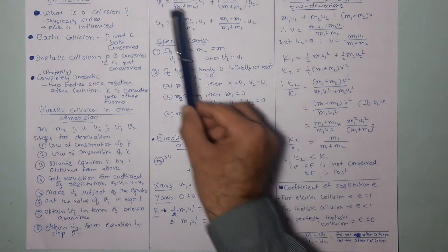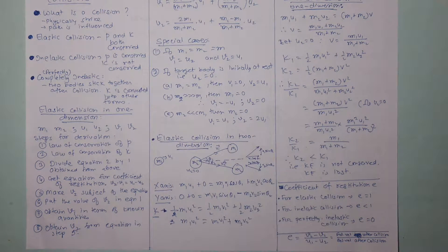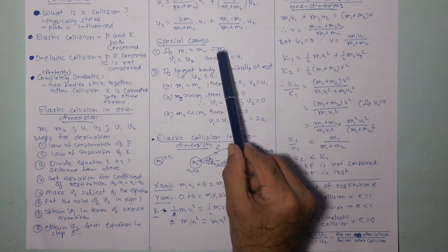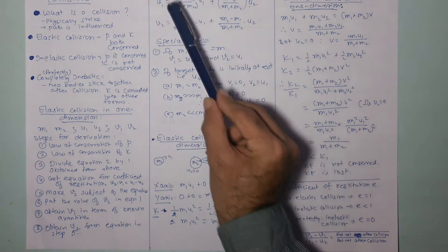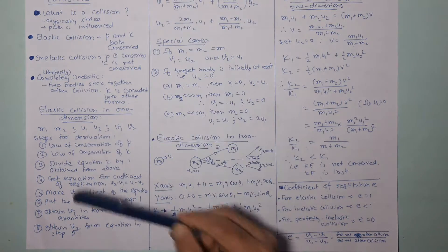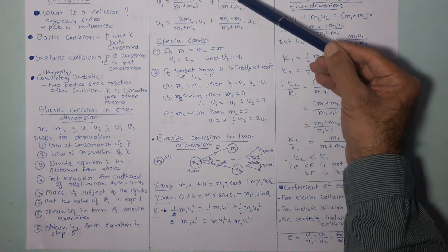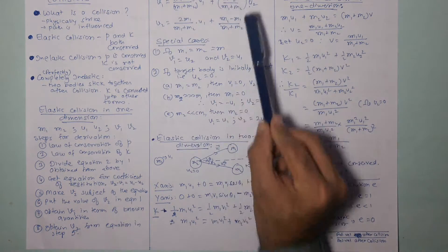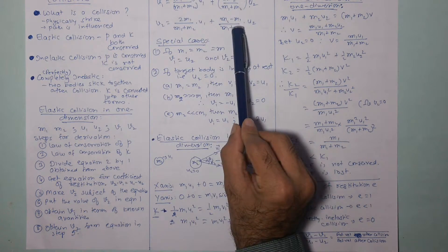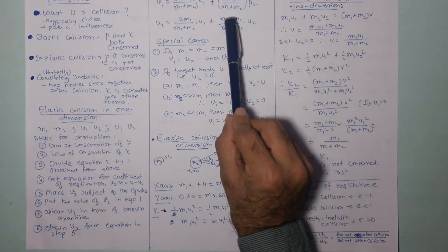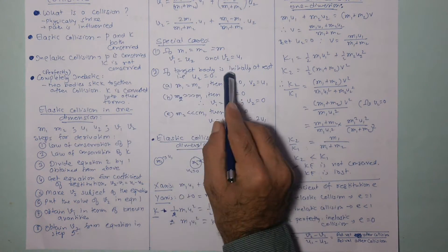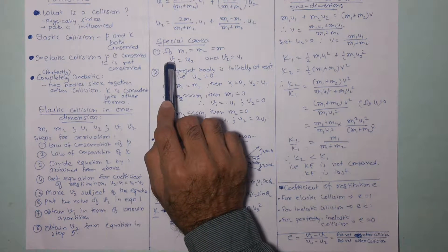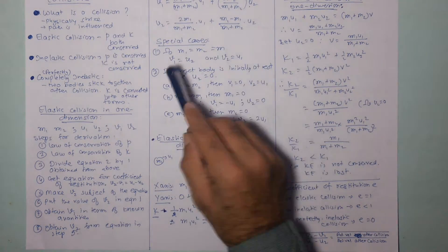These are the generic equations for the final velocities of two colliding objects. Special case 1: if both masses are equal, M1 = M2 = M, then the M1 − M2 term becomes zero, and 2M/(M+M) simplifies. We get V1 = U2 and V2 = U1 — the velocities are exchanged between the two objects.